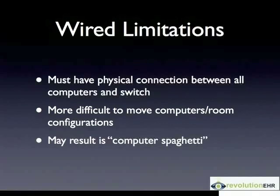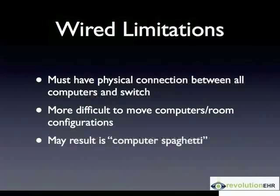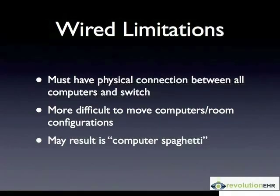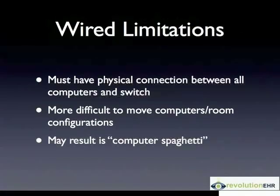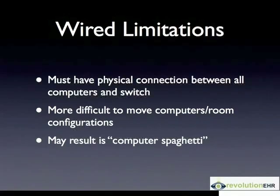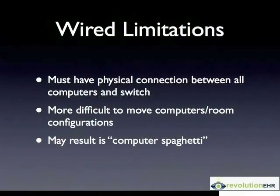There are some limitations to wired networks — you have to have physical connections. If you're in an older building that wasn't wired for computers, you're going to have to run hard wire connections from each workstation back to the hub router. It makes it more difficult to move things from one room to another. And you can have some computer spaghetti — one more cable running to each computer, plus the hub router and switch area can get tangled and messy looking.